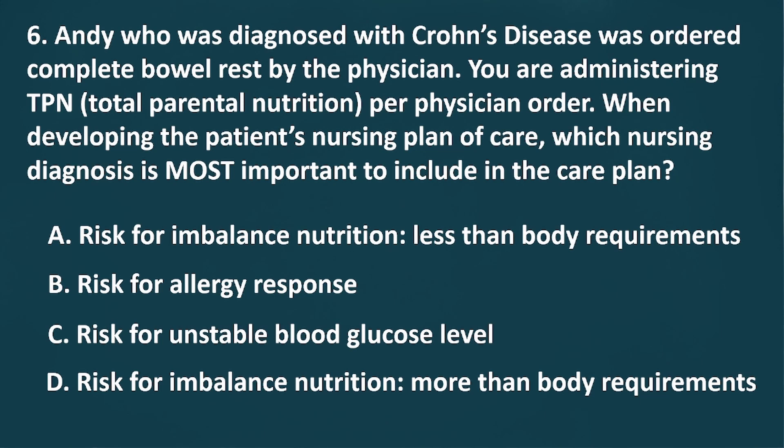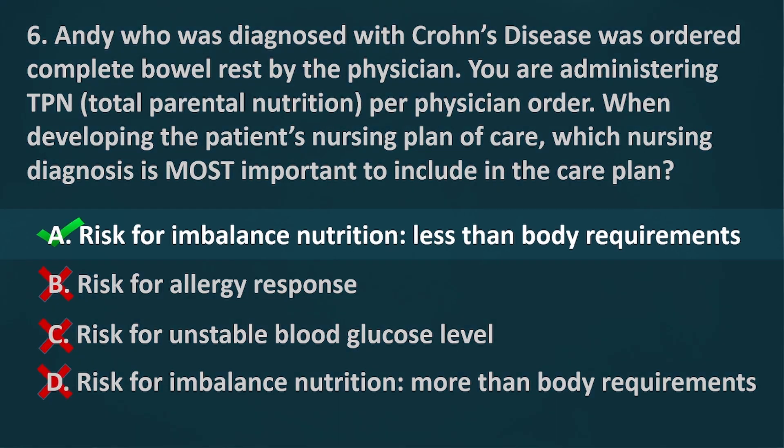The correct answer is Letter A, risk for imbalanced nutrition, less than body requirements. Nutrients we ingest through food should be in adequate amounts to meet our body's metabolic demands. Patients under total parenteral nutrition are at risk for not being able to meet these requirements, so this is the priority nursing diagnosis to be considered.